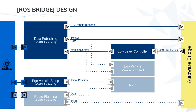The data publishing node, or ROS bridge node, publishes all relevant Carla information to ROS topics. The ego vehicle setup node allows spawning an ego vehicle with its sensor configuration through ROS. The route planning node is optional and can compute a route given an initial pose and a goal. The low-level controller node is mandatory because Autoware and Carla use different control interfaces. Finally, the manual control node can override control commands from the Autoware stack, and the RViz node is for visualization.